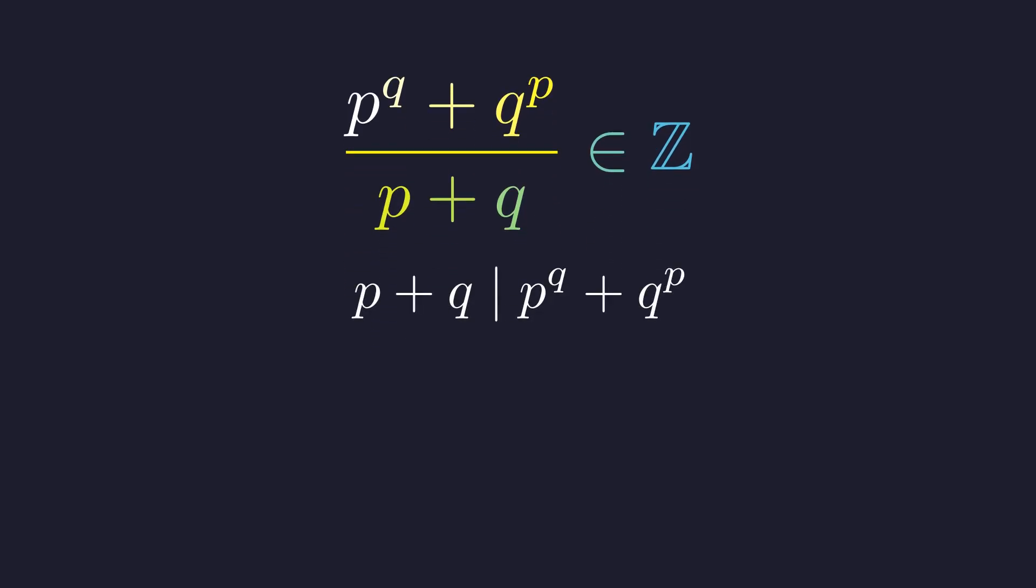In the language of divisibility, the problem asks for which primes p and q this statement holds true. At first glance, it seems daunting. Where do we even begin?